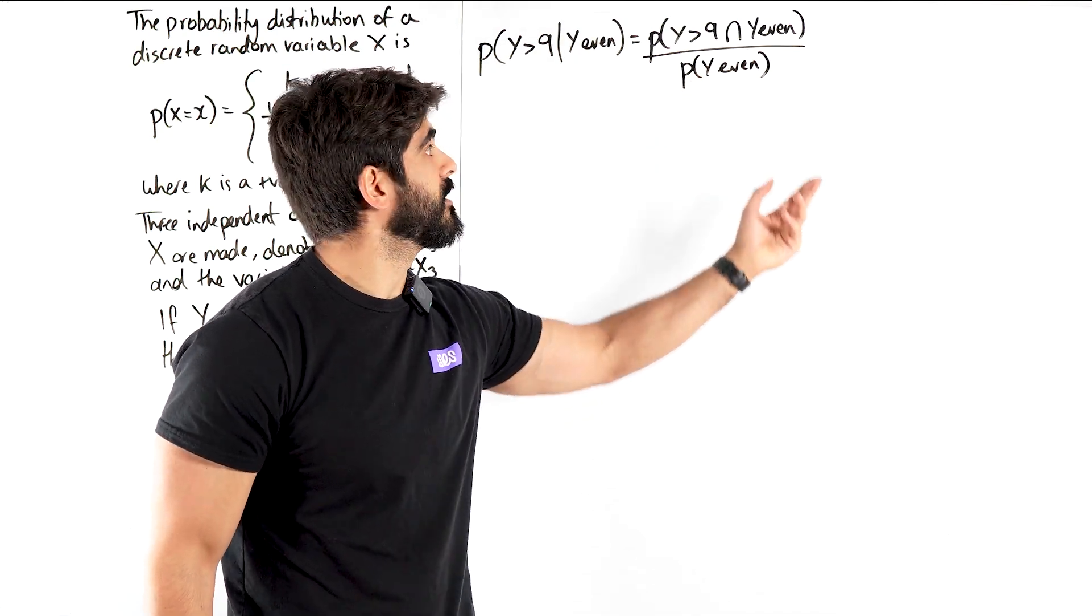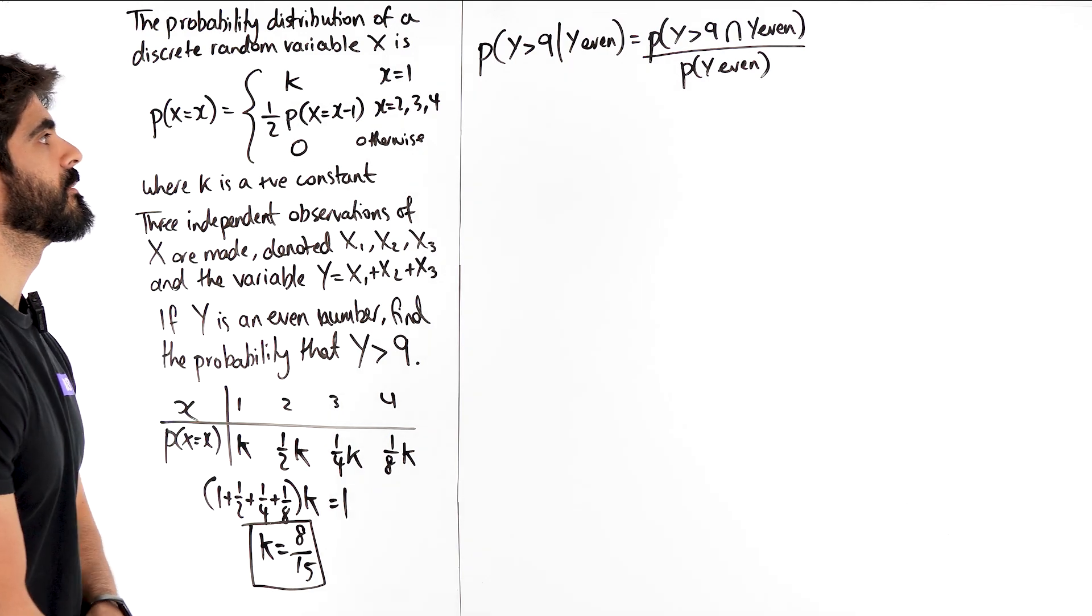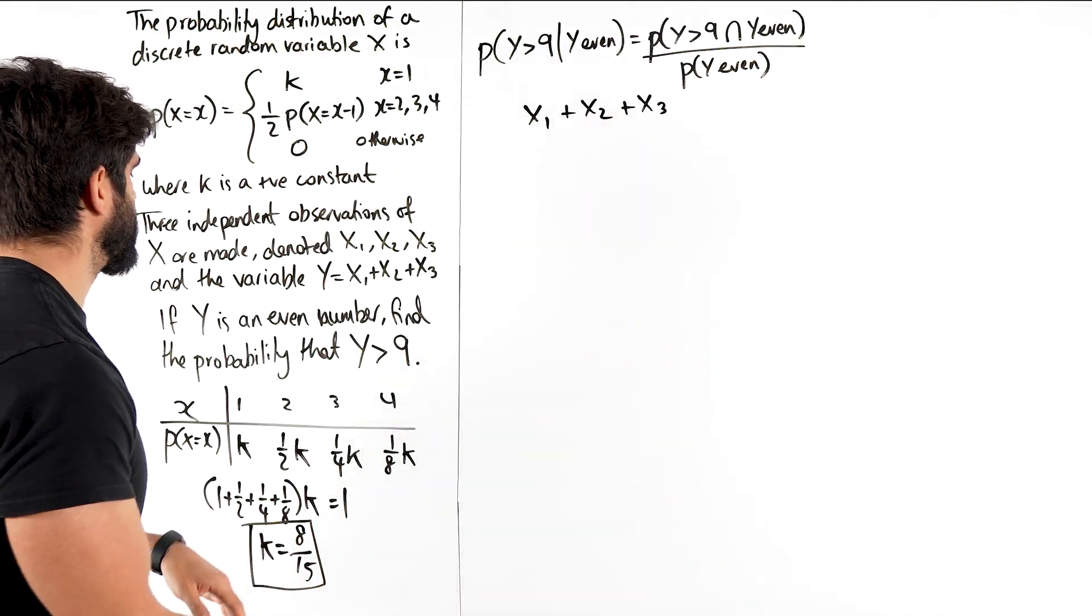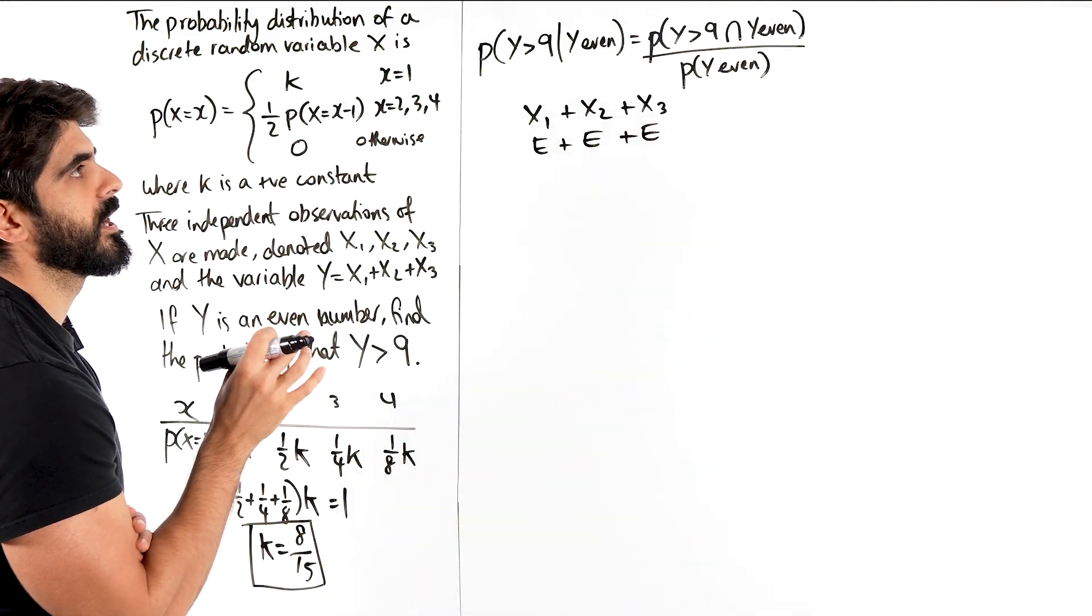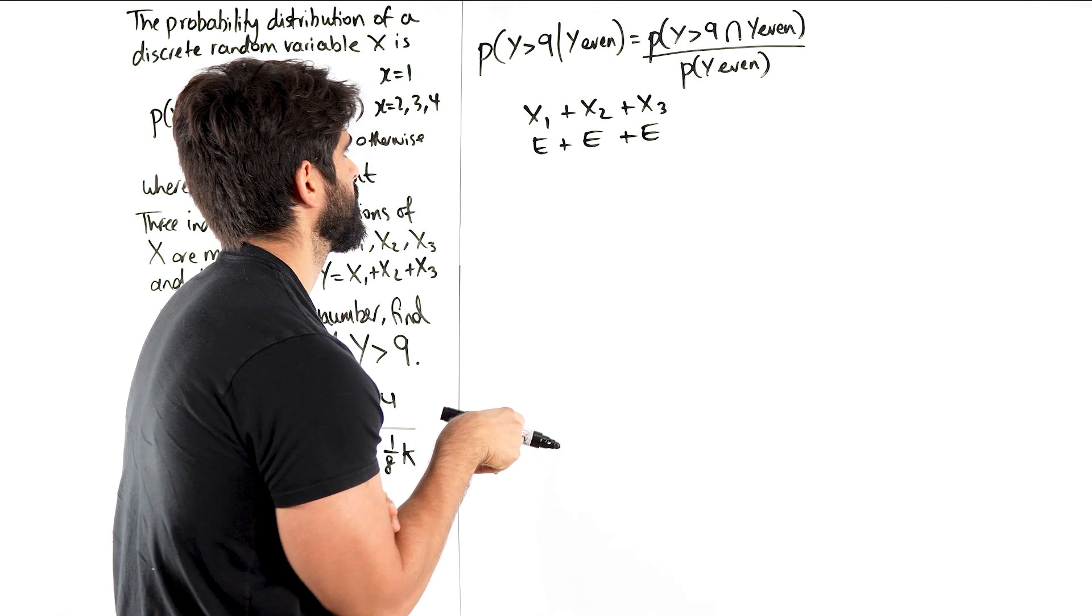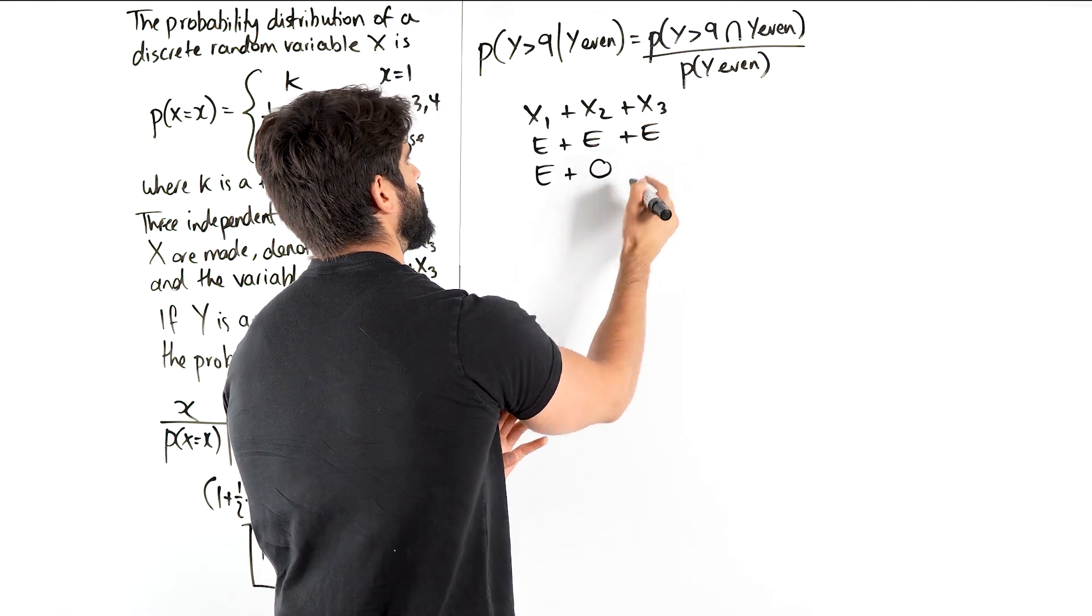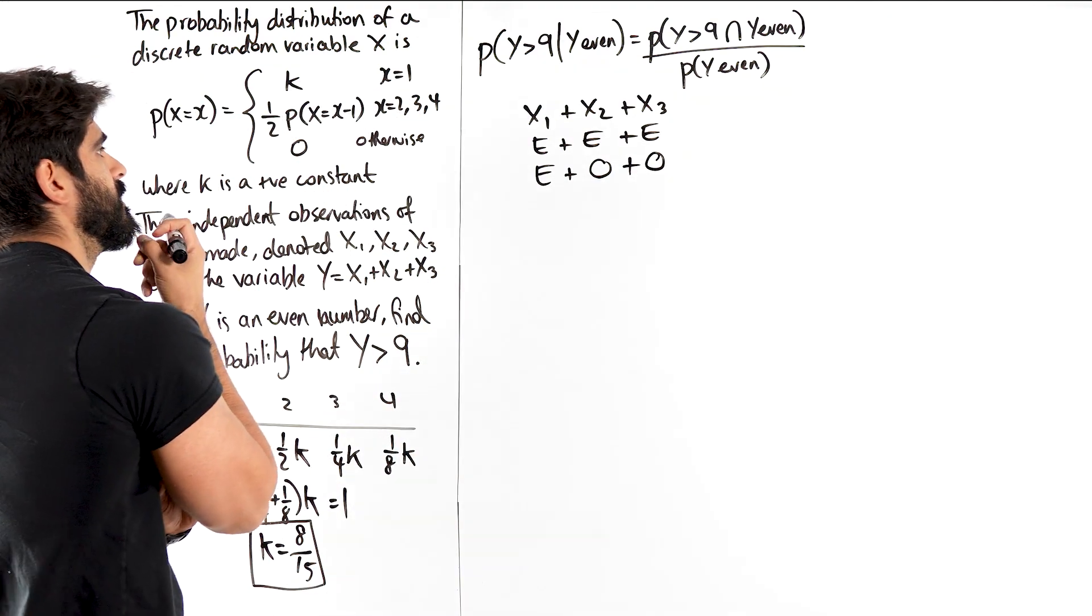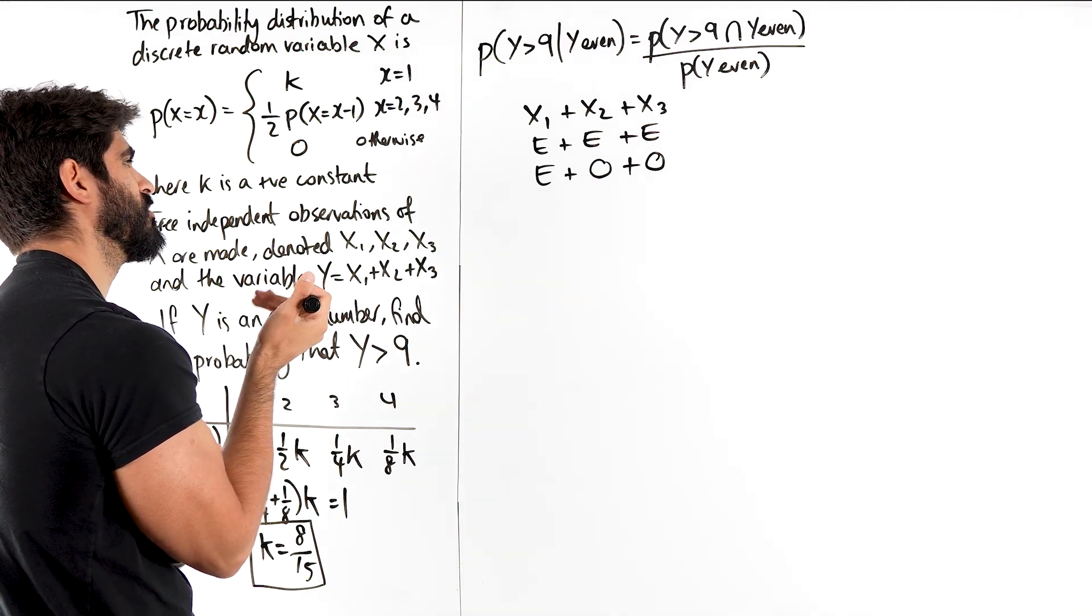Now, y being greater than 9 is a subset of y being even, so we might as well just look at what outcomes would give us y to be an even number. We're adding up three numbers, right? x1, x2, and x3. So we could have it that all of them are even. If I introduce an odd, I need to make sure that there are two odds and an even. If I have even here, if I add odd, even plus odd is odd, like 2 plus 5. So I need to add another odd number. But we could have it the other way, right? We could have odd, even, odd, odd, odd, even. But that is fine. We can just look at the permutations of that.